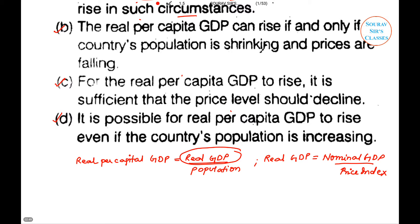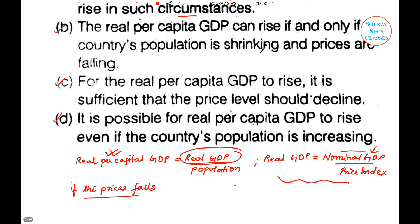In the question, the country's nominal GDP is constant. If the price index falls — that is, if prices fall — then using the relation Real GDP = Nominal GDP / Price Index, the numerator is constant and the denominator falls, so Real GDP will rise.